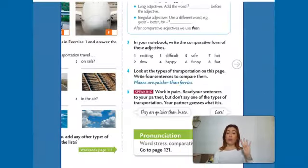Right. So, now, let's choose four of the adjectives from the exercise above, exercise three, and try to make sentences with them. Here we have an example. Number four. Planes are quicker than ferries. So, think about everything we talked about transport and then use it to make sentences. And I'll see you later for the next video.